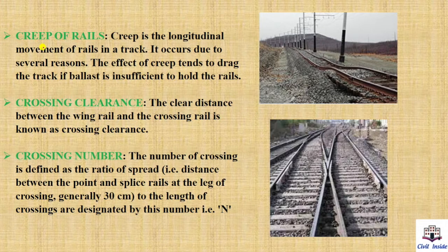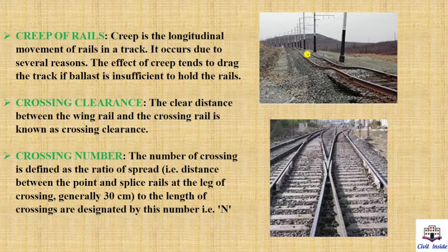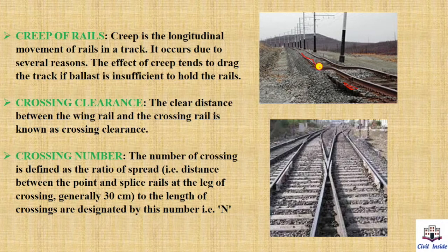Next, creep of rails. Creep is a longitudinal movement of rails in a track. It occurs due to several causes; the effect of creep tends to drag the track. It happens due to train movements and loose fastenings. As the train moves, the rails creep longitudinally — this is a small but significant movement in the longitudinal direction.